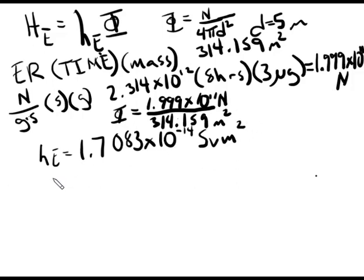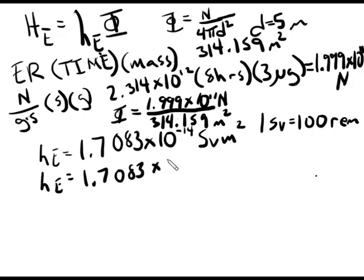We don't generally use Sieverts, so let's do this. One Sievert is equal to 100 rem. So that means that h sub e is equal to 1.7083 times 10 to the negative 12 rem meters squared. Good job. Now, what do we do? Oh, yeah, that's right. It's this right here, guys. Good job.